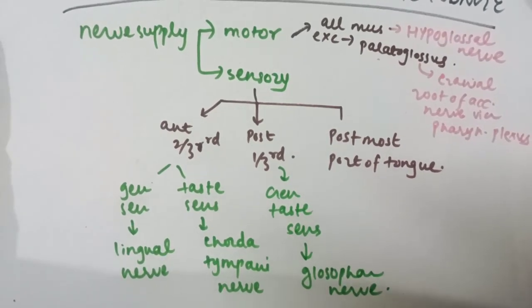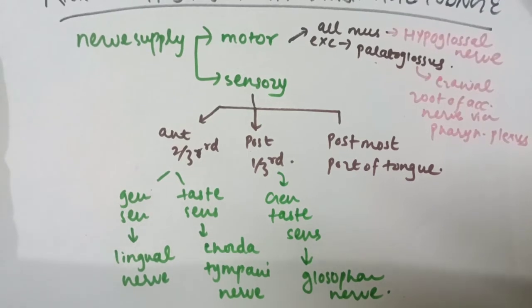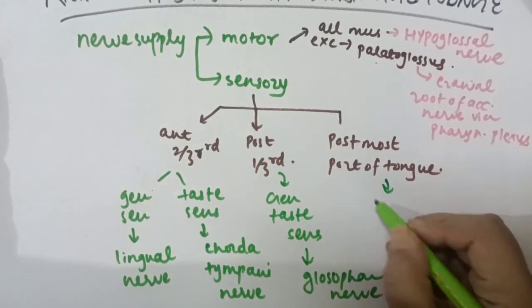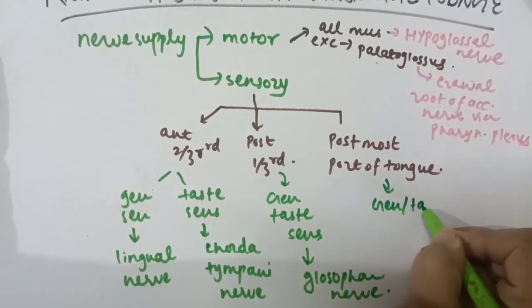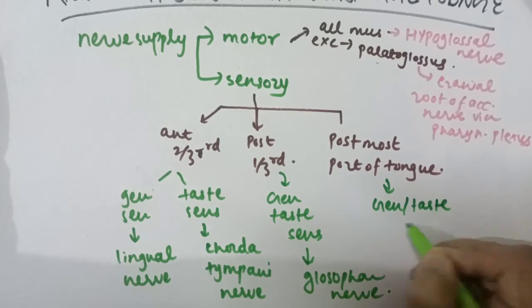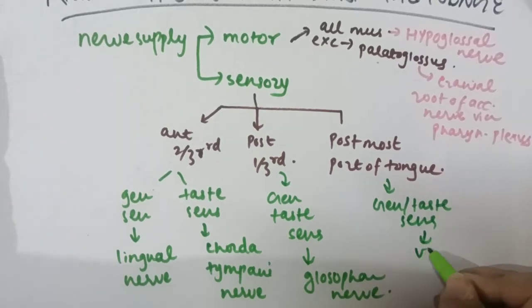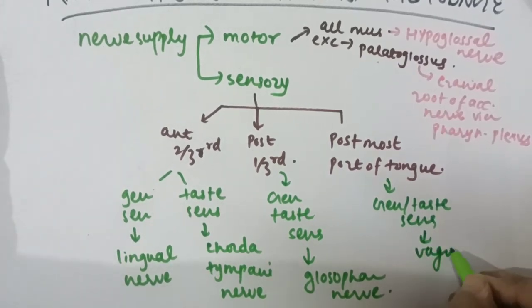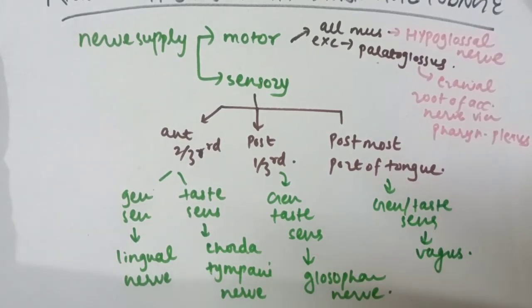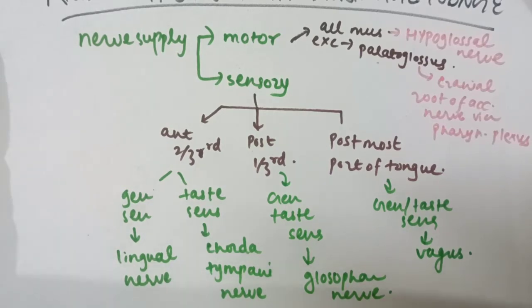The posterior-most part of the tongue has both general and taste sensation supplied by the vagus nerve. This completes the nerve supply of the tongue. Now moving on to the lymphatic drainage of the tongue.